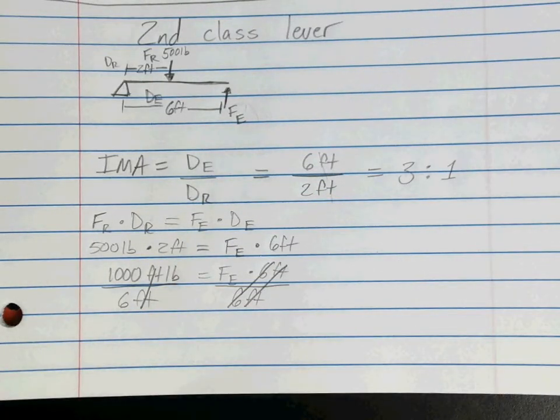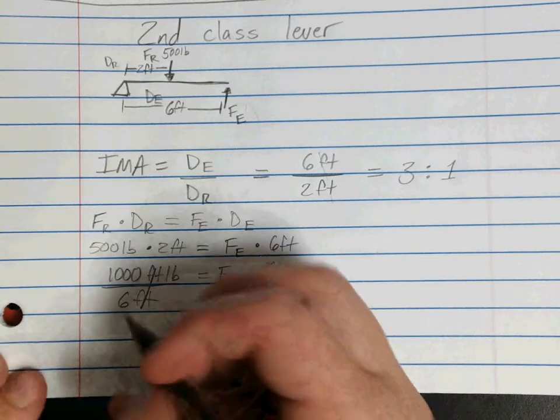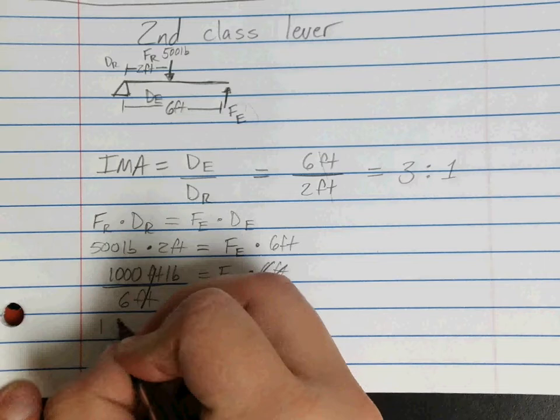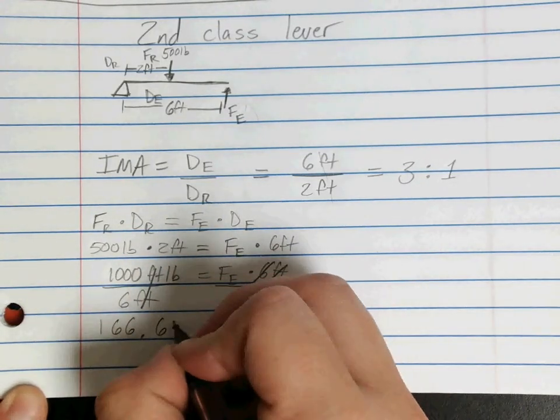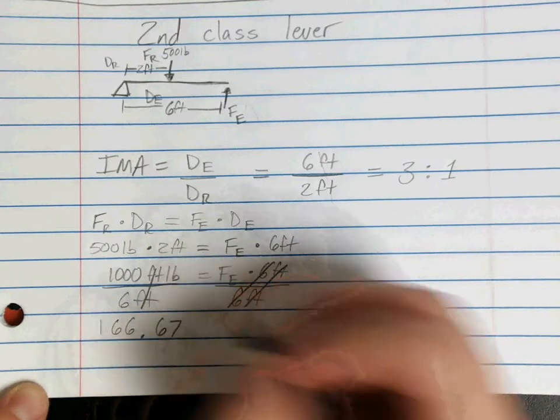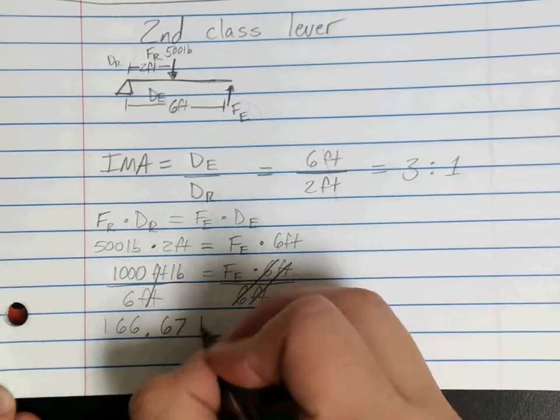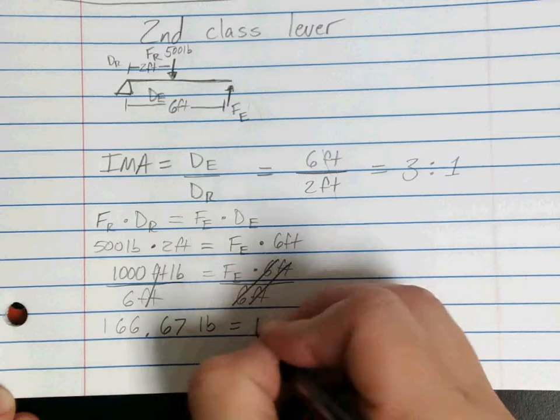So then we're left with 1,000 divided by 6. 1,000 divided by 6 is going to give us 166.67 repeating-ish. So just 6, 7 for now. And we're keeping our pounds. And that equals FE.